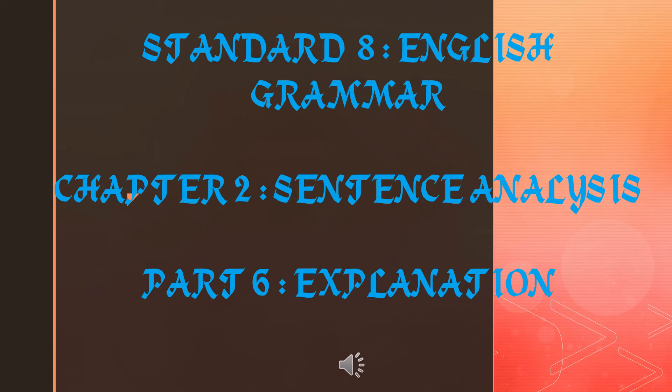Good morning everyone. In this part we are going to discuss the second part of sentence analysis, that is the predicate. The predicate is the part of the sentence that tells us something about the subject. The predicate may be a single finite verb, or it may be a verb with an object or some more words that are needed to complete the meaning of the sentence.